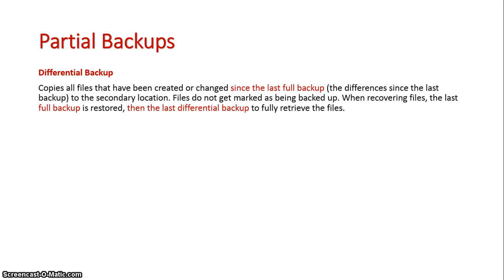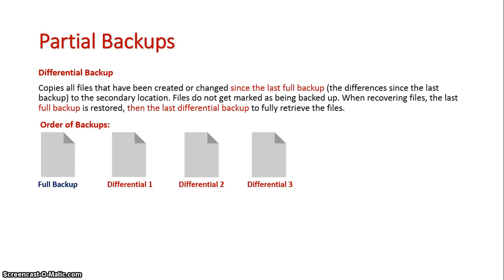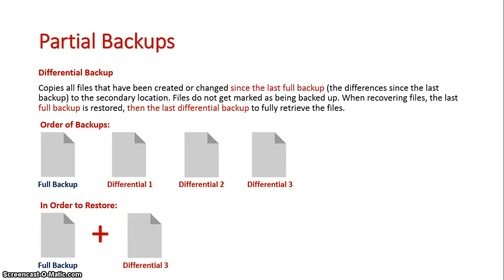If there has been a differential backup already done since the last full backup, the more recent differential backup will cancel the previous differential out. So if we look at this example — if I've done a full backup, then differential backup 1, differential backup 2, and differential backup 3 — in order to restore my system I need the full backup but only differential backup 3, because that covers everything backed up since the last full backup. As time goes on, I am gradually increasing the amount I need to back up with my differential backups.